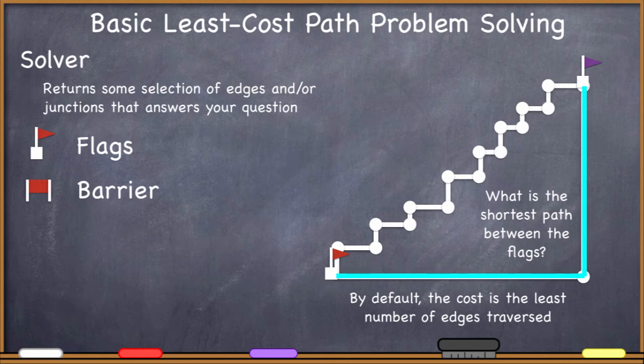In this case, the computer found two edges: the line along the bottom and the line along the top — only two edges to traverse. If you were to take the other route, there are fourteen different edges to travel between the red and purple flag. So according to the computer's default parameters, that's the longer route.